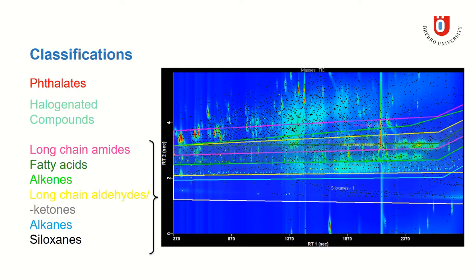Among having higher peak capacity and better separation, another advantage of 2D GC is being able to apply classifications. So, this is a combination of defining regions in the 2D GC and applying spectral filters, and I did this for the compound groups here on the left.